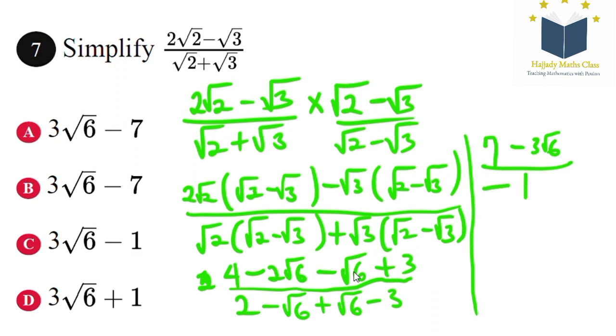Dividing both by minus 1, we have 3√6 minus 7. This changes the position of the terms in the numerator.